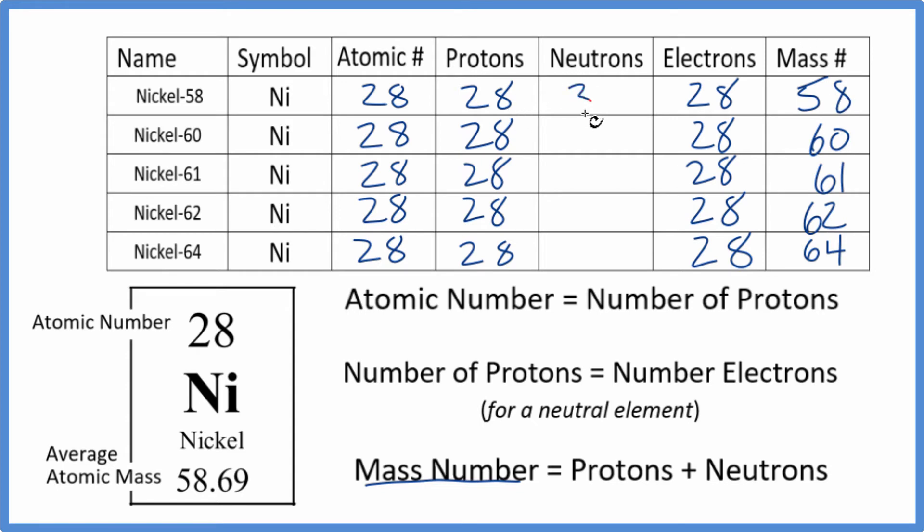28 plus 30, that would give us 58. Likewise, 28 plus 32, that would give us 60. We could also say 61 minus 28, that would give us 33. Either way, you'll get the same answer there. So that's how you figure out the neutrons when you have mass number. If you're given the neutrons, you just add these two together.